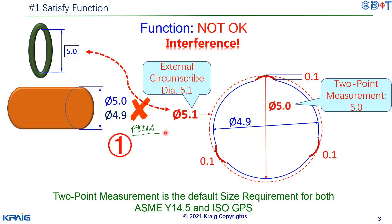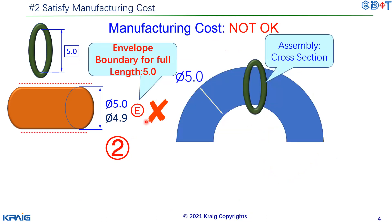So we need to change our requirement to use the external diameter instead of two-point measurement. To do that, we add the envelope requirement — the circle E — which defines an envelope boundary. This means the entire pin must lie within a boundary equal to the maximum material condition (MMC) boundary, which for this pin is 5.0. You can imagine it as a tube: the full length of the pin must be contained within this 5.0 tube.